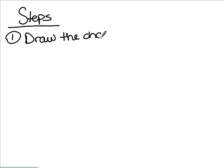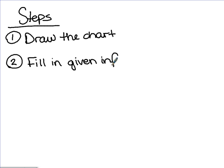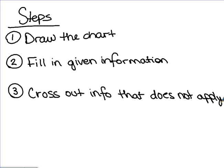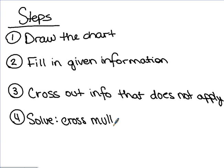Let's talk about the steps for solving these problems. Step one is to draw the chart. Step two is to fill in the given information. Step three is to cross out information that does not apply. And then we solve just like we solve a proportion — cross multiply and divide. Those are the four steps in solving percent word problems.